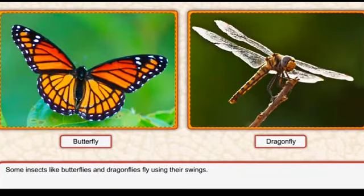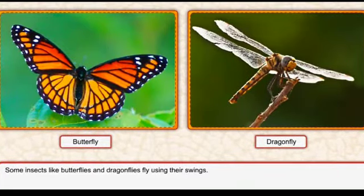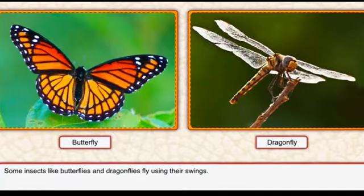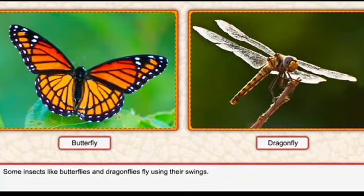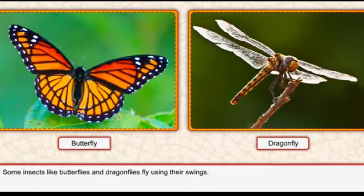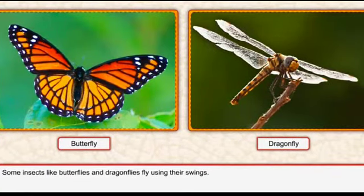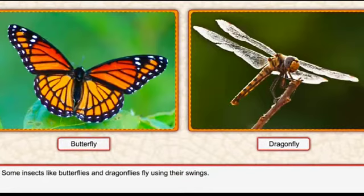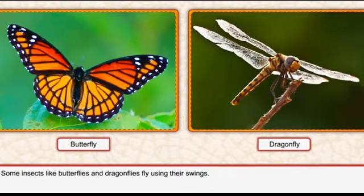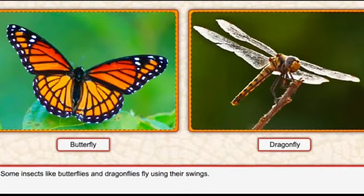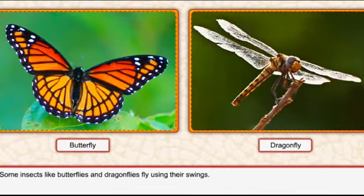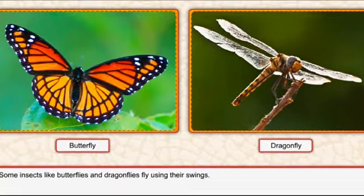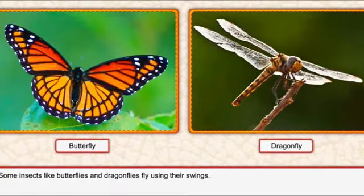Some insects like butterflies and dragonflies fly using their wings. Kuch keede jaise butterflies aur dragonfly - yeh apne wings ko, matlab apne paron ko, istemal karti hain ek jaga se doosari jaga move karne ke liye.